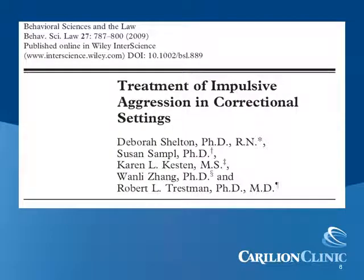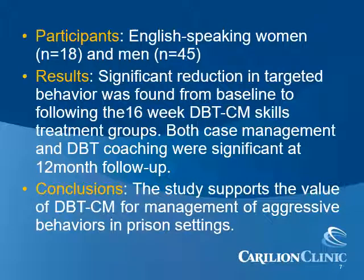This next study by Dr. Trestman and colleagues looks specifically at impulsive aggression intervention in the correctional setting, published in 2009. The intervention examined was DBT modified for the corrections setting. DBT-CM corrections modified was found to significantly reduce targeted behavior from baseline after the 16-week group treatment. DBT-CM and case management remained significant at the 12-month follow-up, supporting the use of DBT-CM to help inmates manage impulsive aggression.